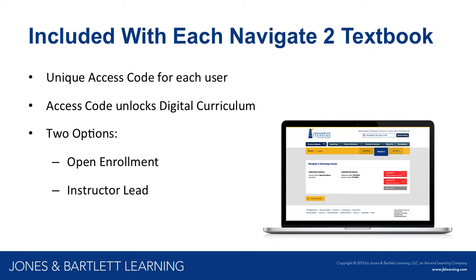With each Navigate 2 textbook, there is a unique access code that unlocks the digital curriculum and gives the student access to digital components. Students have two options when they redeem their access code: open enrollment, which gives them the out-of-the-box solution without any instructor customizations or assessments; or an instructor-led course, where we build you a course and provide a six-digit alphanumeric course code you disseminate to your students. Students redeem their access code, associate it with the course code, are placed automatically in your gradebook and roster, and then simply log in to be placed automatically into their class.